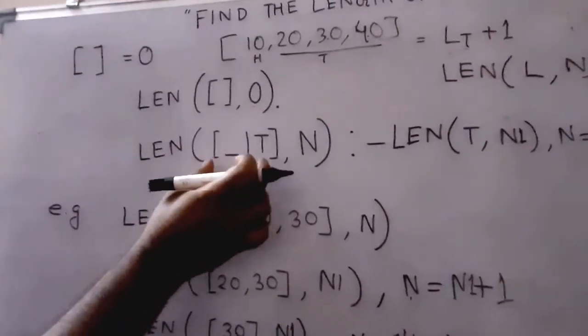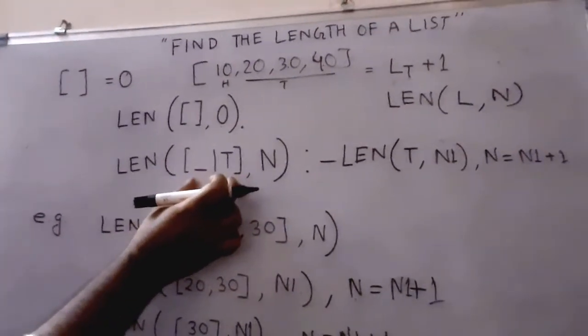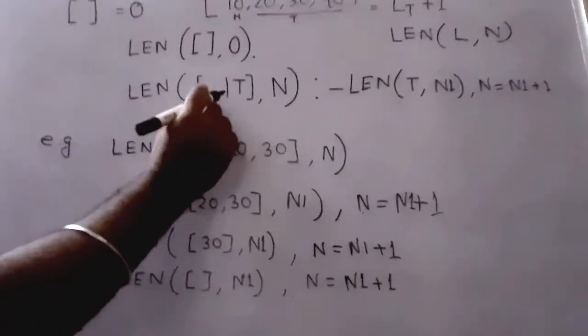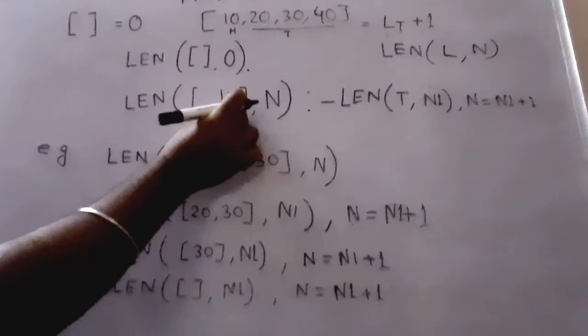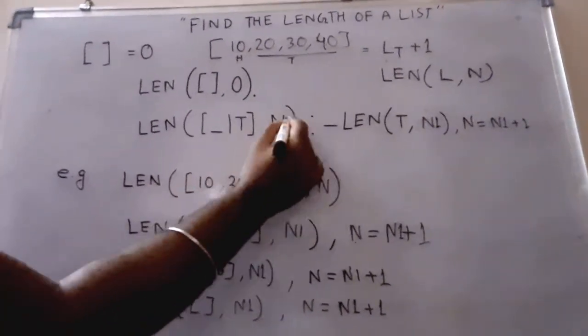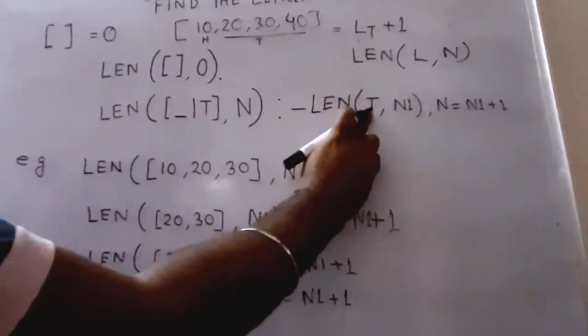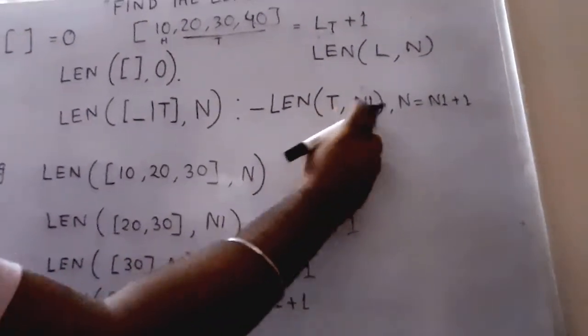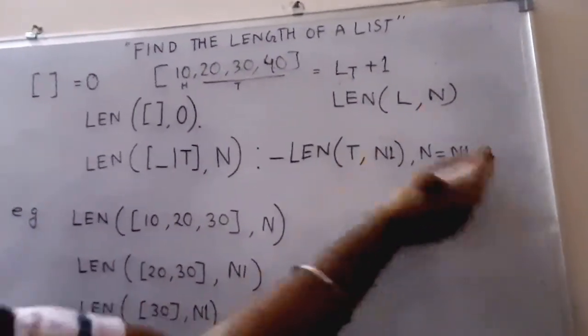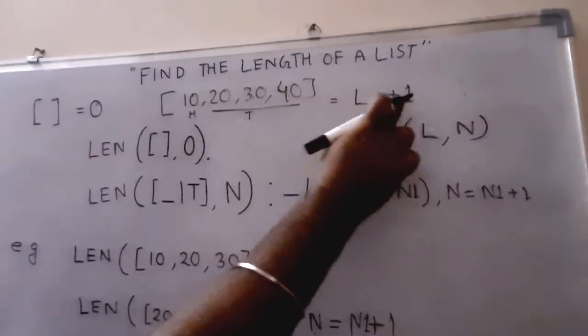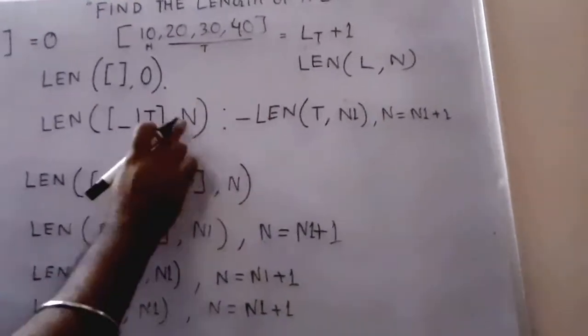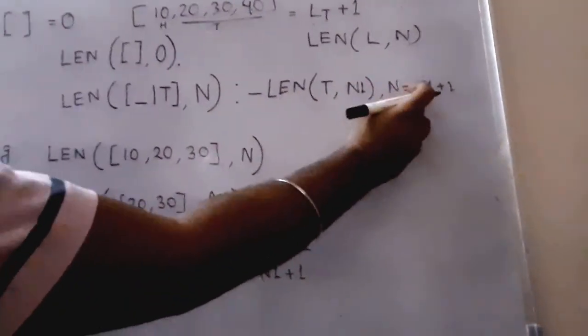But if we're sending a non-empty list, whatever the head part is, we're considering the tail part. The length of the list is N. So what will N be? N is the length of the tail plus one. The length of the tail is N1, so N = N1 + 1. That is our logic: length of the tail plus one.